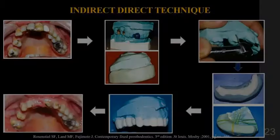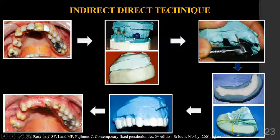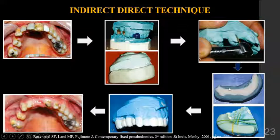The indirect-direct technique is a combination of the two techniques and provides an atraumatic means to achieve the most accurate fitting prosthesis. An impression is made, a diagnostic cast is poured, a wax-up is done, and a putty index or matrix is formed. A check cast is poured on which tooth preparation is done. The matrix is filled with resin and placed on the prepared cast, then stabilized with an elastic. Once set, the prosthesis is fabricated.